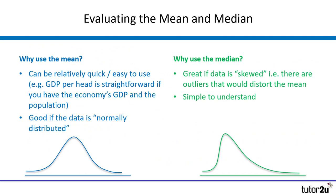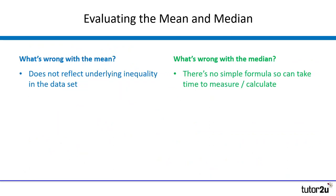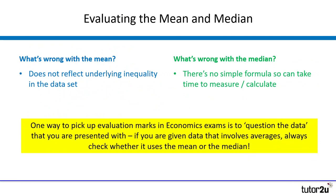The median is also fairly simple to understand. So what's wrong with both measures? The mean does not tend to reflect the underlying inequality or unusual spread of data in a given data set. The median deals with that, but the problem with the median is that it can be quite time-consuming and difficult to calculate — there is no simple formula. You do have to take the time to put data in order from smallest to largest, which can be really complicated if you have an enormous data set.